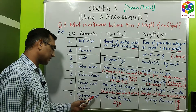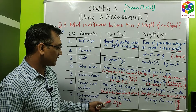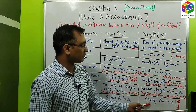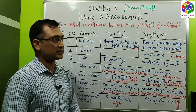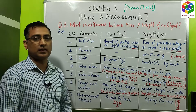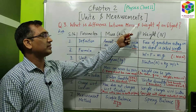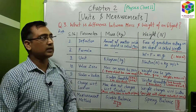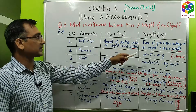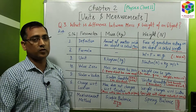The last difference is measurement method: the mass of an object is measured using a simple balance, but the weight is measured using a spring balance. In this lecture, we initially discussed the mass of the object, then the weight of the object, then the measurement methods, and finally the differences between mass and weight of an object.